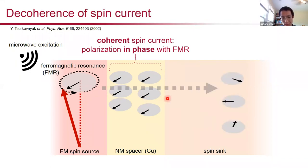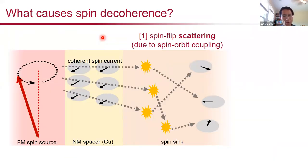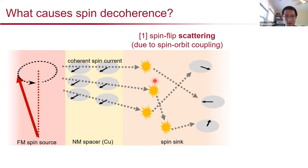When the spin current enters a spin sink material, something can disturb the coherence such that after propagating over a certain distance, we lose the mutual synchronization of the spins — this is what we mean by decoherence. One possibility for causing decoherence is spin flip scattering, which can arise from intrinsic spin-orbit coupling. Every time an electron carrying spin gets scattered, its spin polarization can be altered, such that with enough scattering events we end up with a collection of randomized spin polarizations.